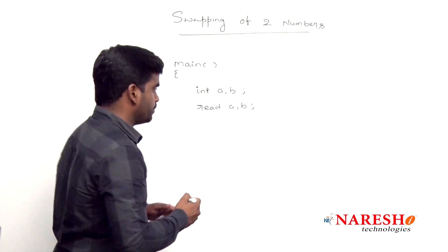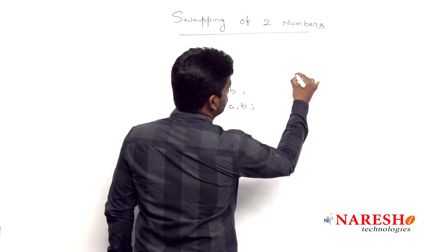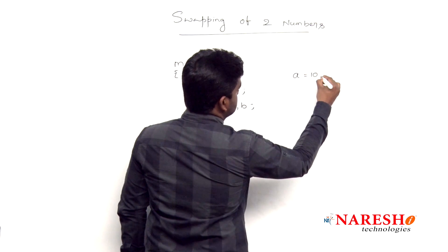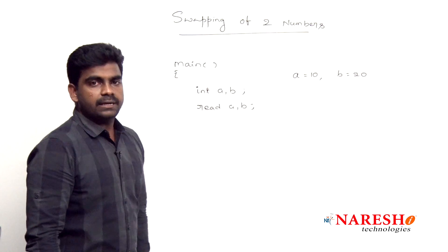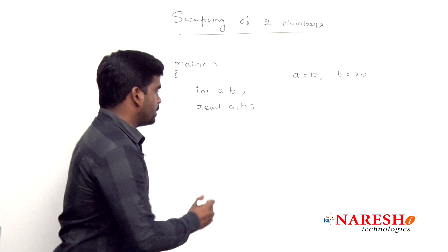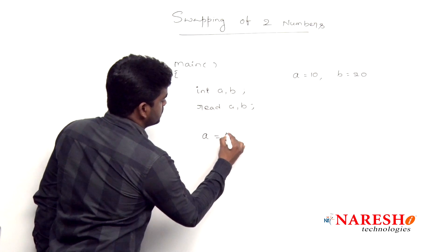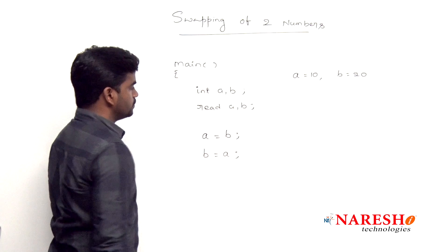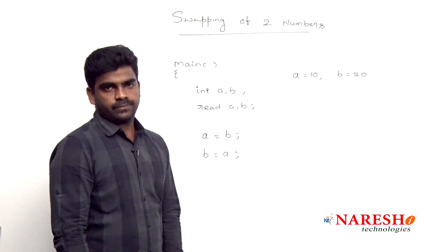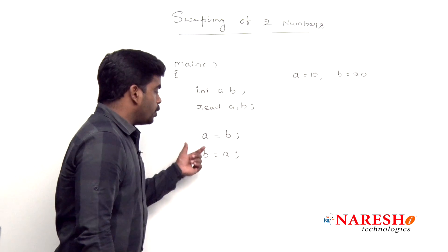Generally, swapping means - suppose a value is 10 and b value is 20. A equals 10 and b equals 20. We simply cannot write like this: a equals b and b equals a. This is not allowed. Why?